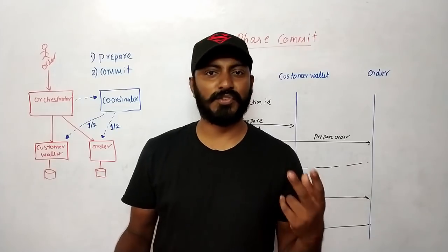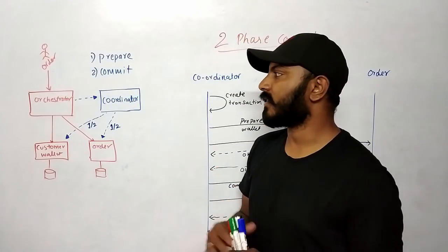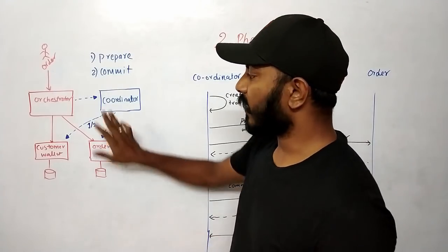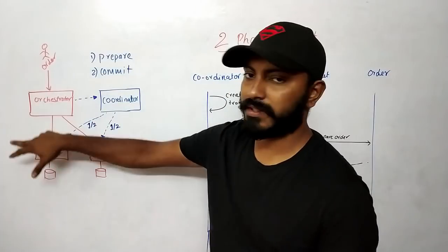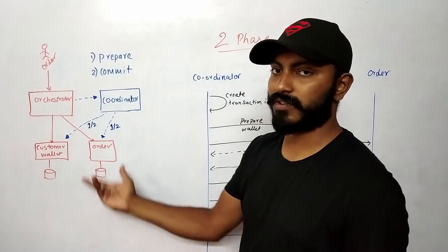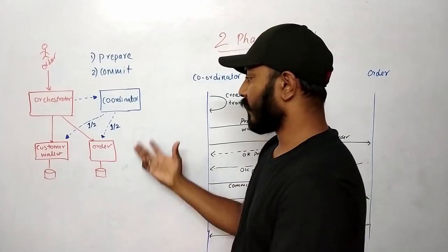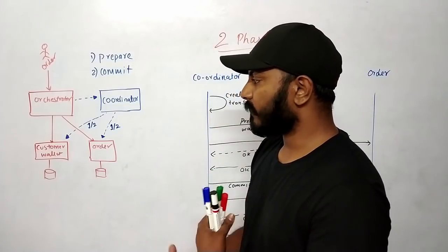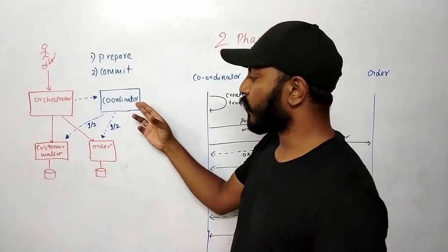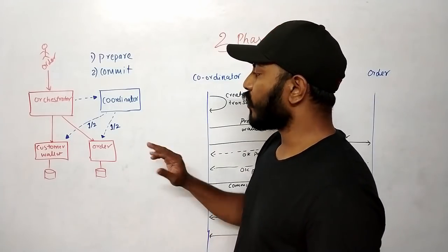As the name implies, two-phase commit has two phases: Prepare and Commit. A new component called the Coordinator is introduced. In the earlier microservice diagram, we had an orchestrator, Customer Wallet microservice, and Order microservice with their own databases. Now the Coordinator is added — it can be an independent service or embedded in an existing microservice.